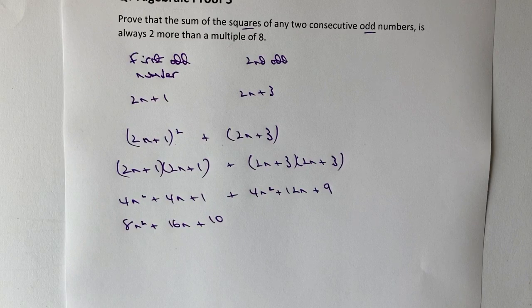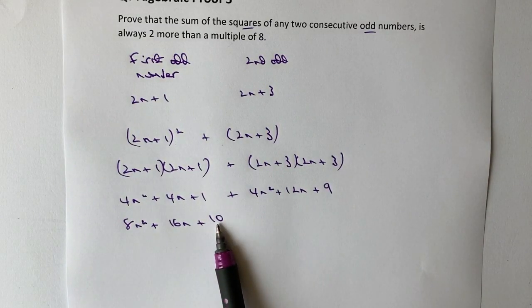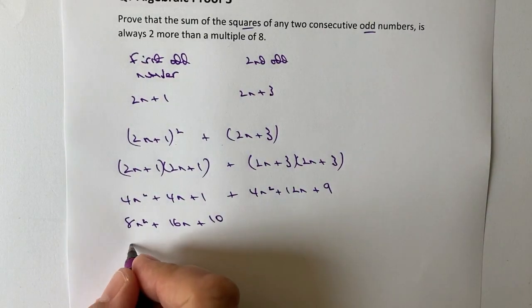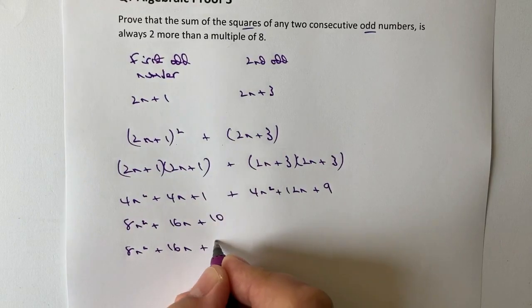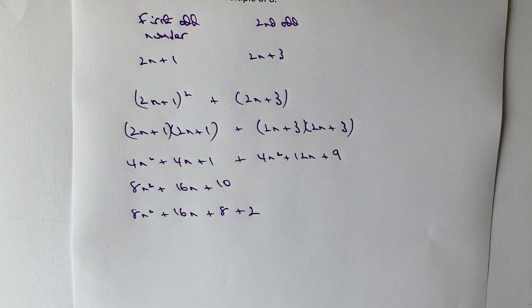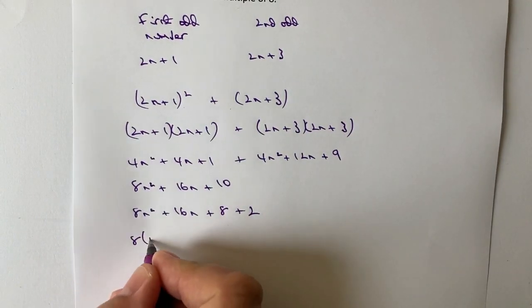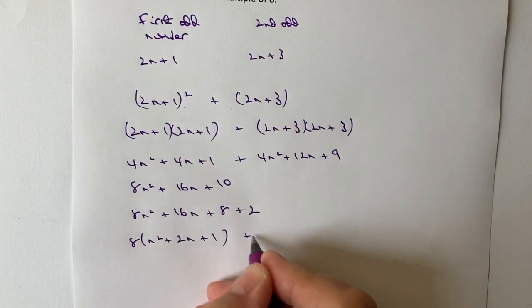So therefore we could have multiple of eight. Well, you'll notice that 8 and 16 are both divisible by 8. But I could actually change this part of it to write it as 8n squared plus 16n plus 8 plus 2.